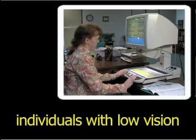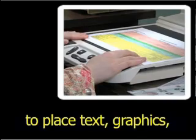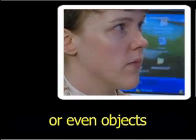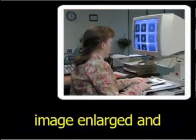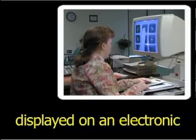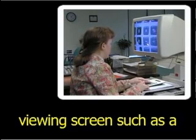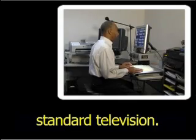Video magnifiers allow individuals with low vision to place text, graphics, or even objects under a video camera and then have the selected image enlarged and displayed on an electronic viewing screen such as a computer monitor or standard television.